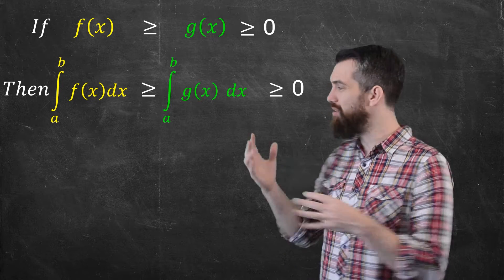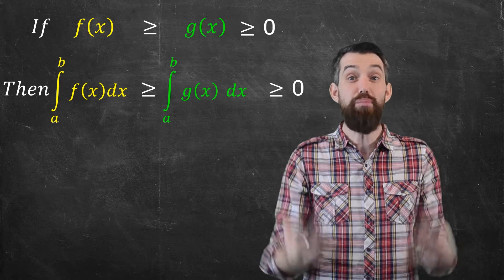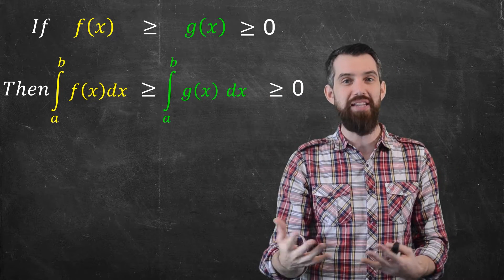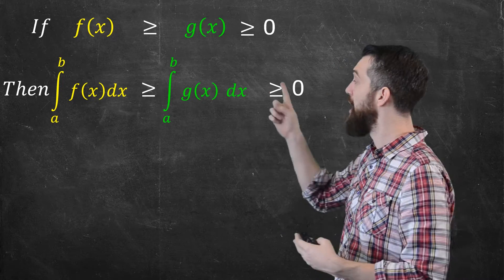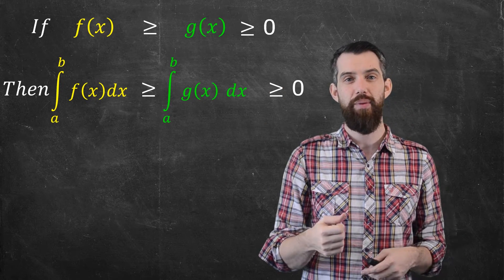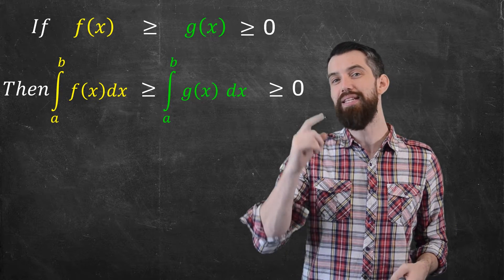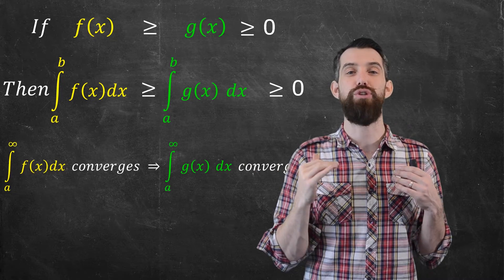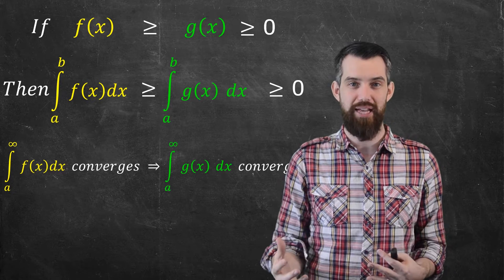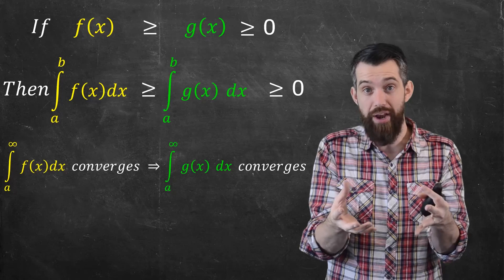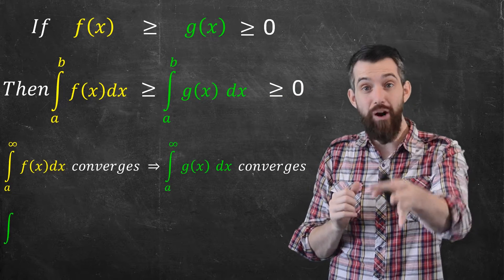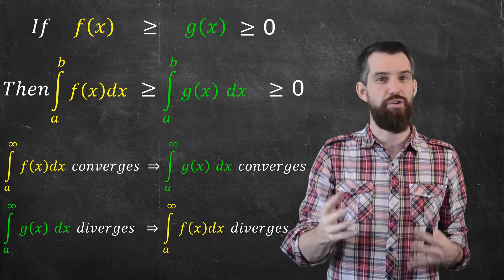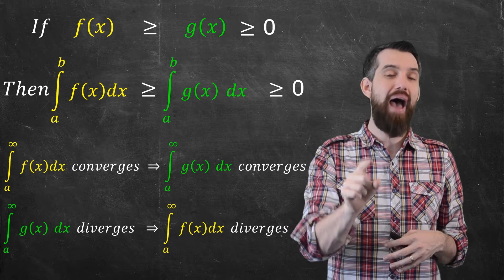Now I can use this to talk about convergence. For the improper integral where b is replaced with infinity, the way improper integrals are defined is as a limiting concept — you take a limit as the b values go off towards infinity. Because the integral of f is always going to be greater than the integral of g, if the bigger one converges — if f converges — then so too does the smaller one, g. And so we have this comparison test. Conversely, if the smaller one diverges to infinity, then the bigger one must diverge as well: if the integral of g diverges, then the integral from a to infinity of f must diverge as well.